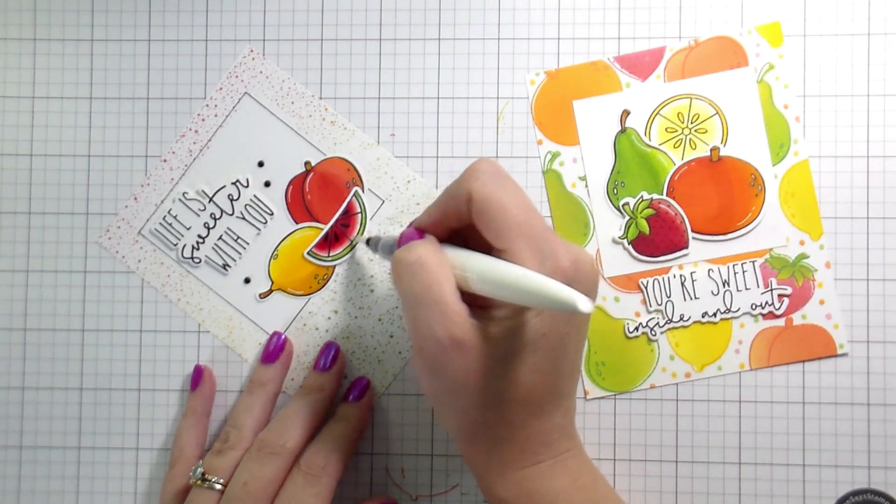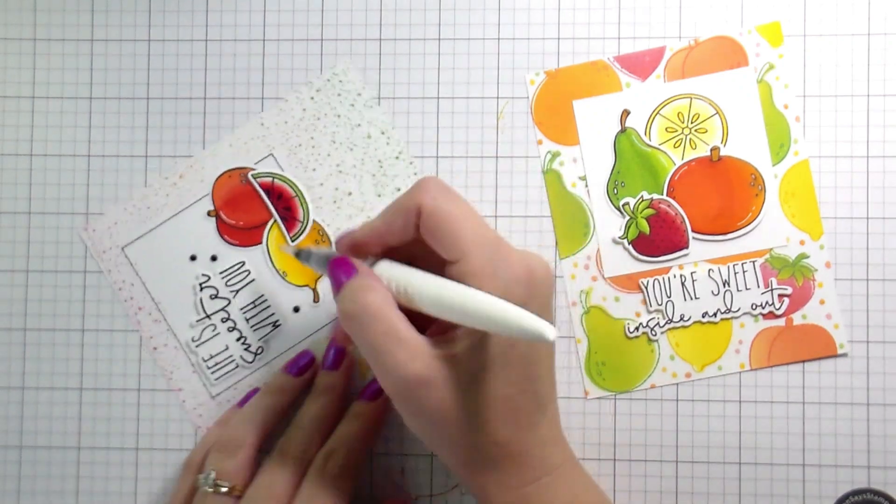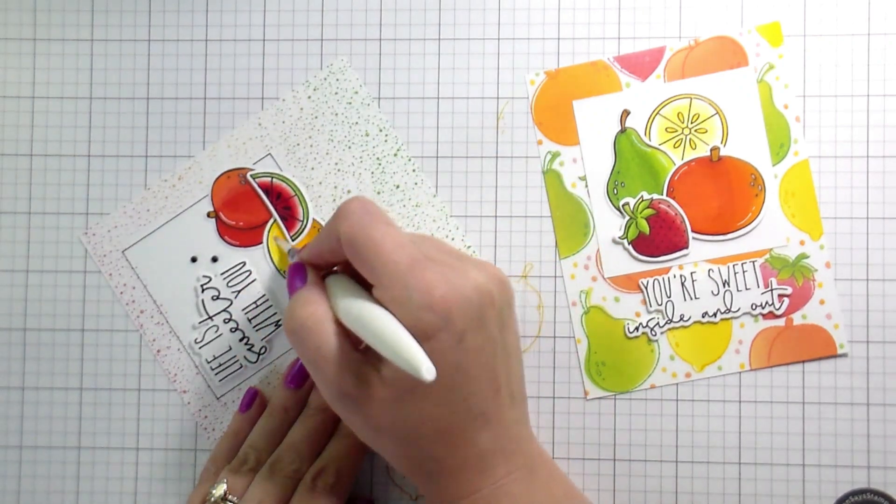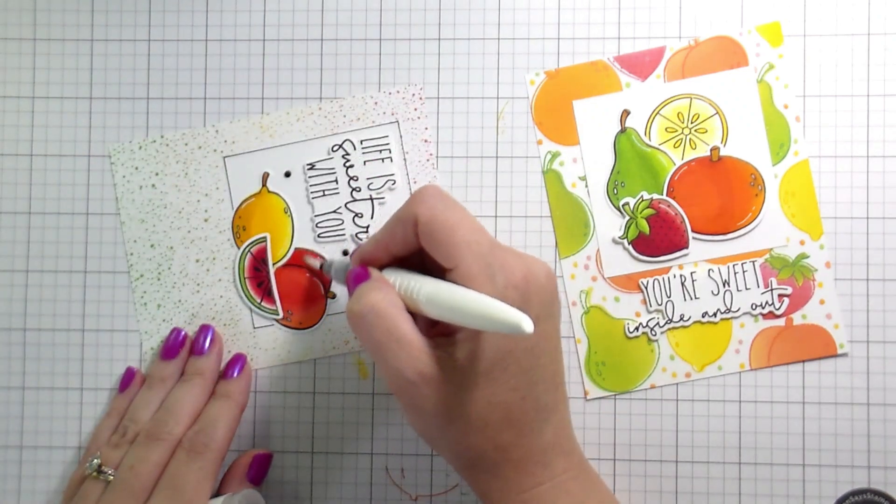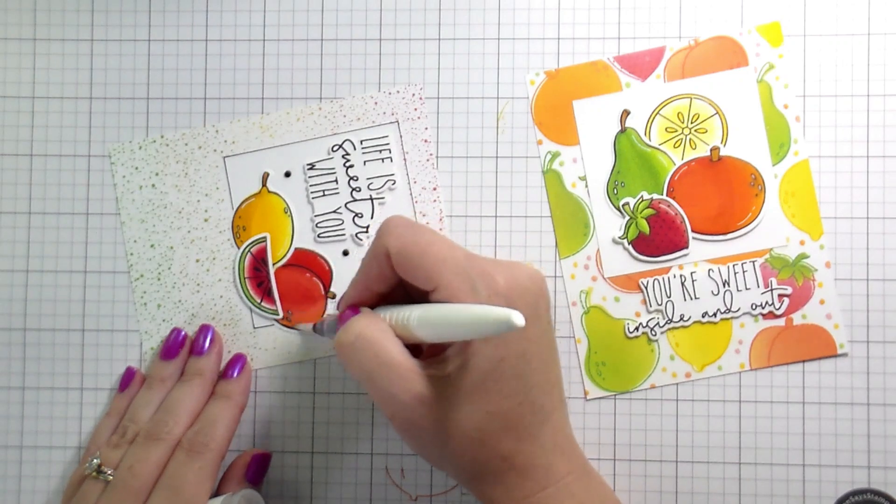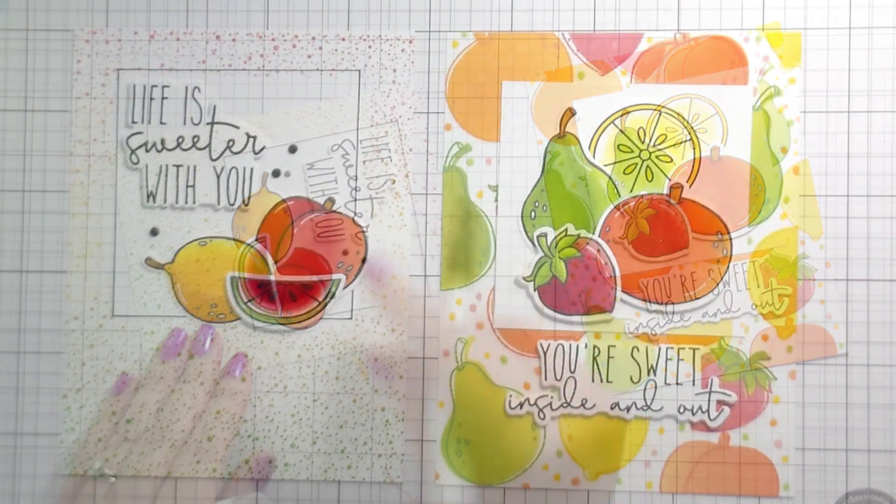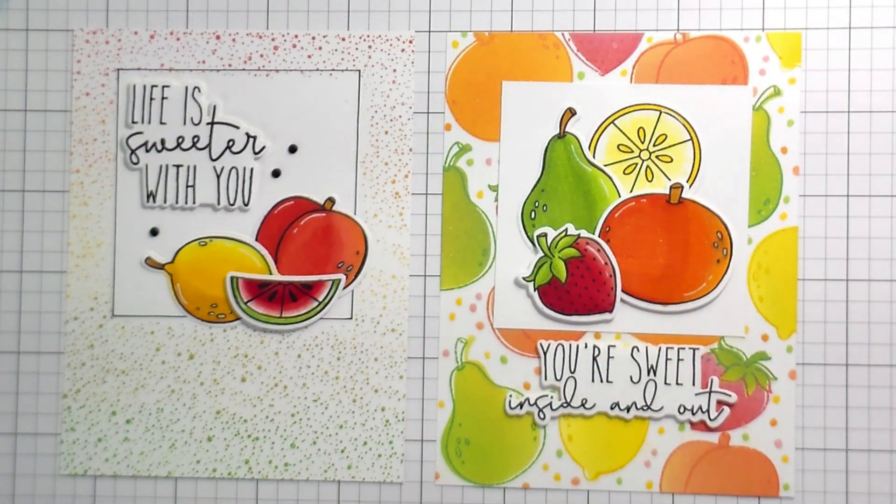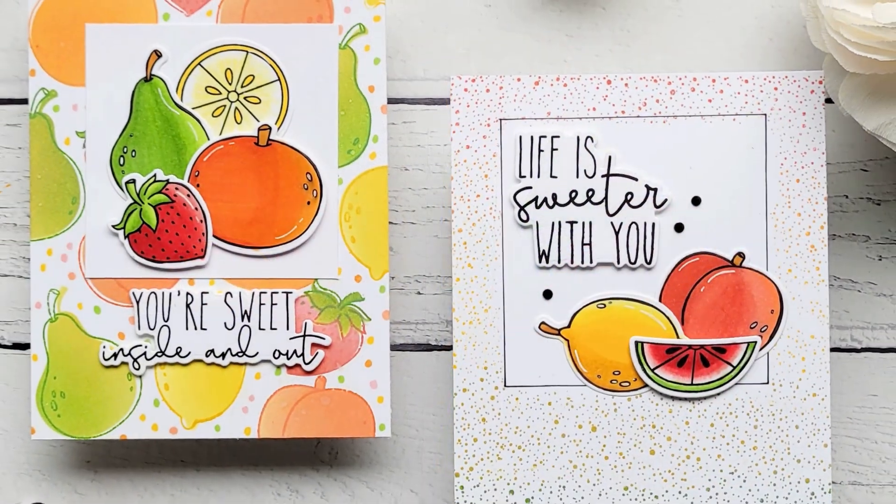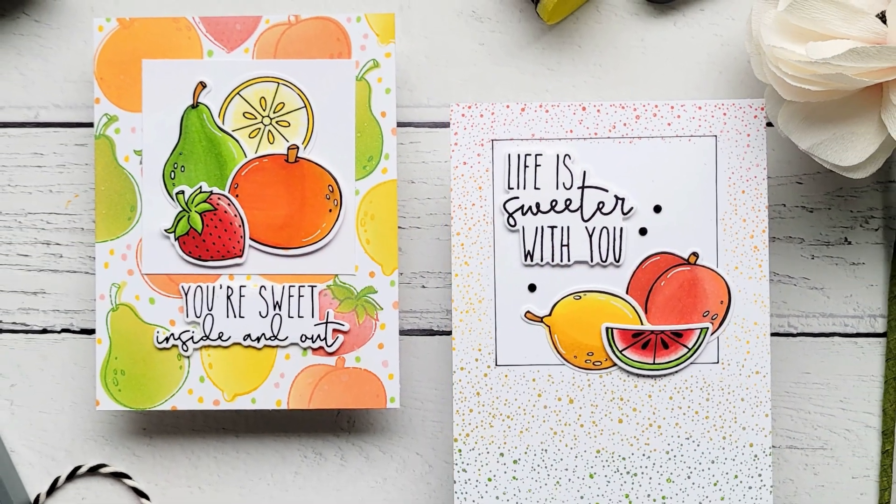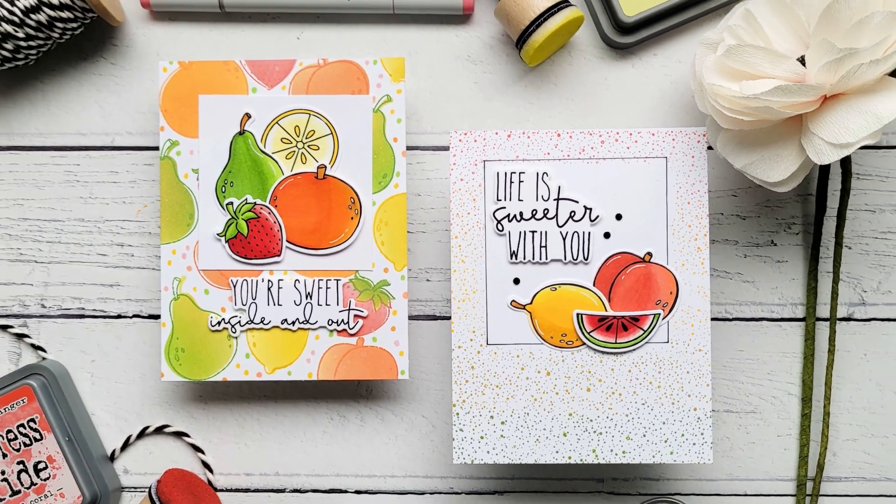So unfortunately we're going to end story time there and we will pick it up with the next video. Here I'm just adding some glitter, clear glitter to the fruit. Again, not necessary, but if you know me, then I don't need to give you any sort of explanation. And then that's it. These are both cards are done. I think they're super fun for summer and hopefully gave you some tips that you can use for your Copic coloring. I will catch you guys on the next video. Bye.